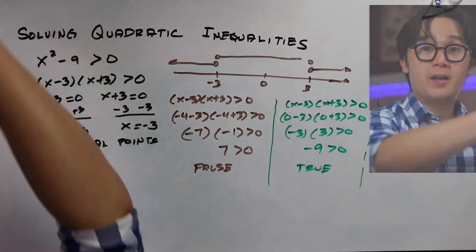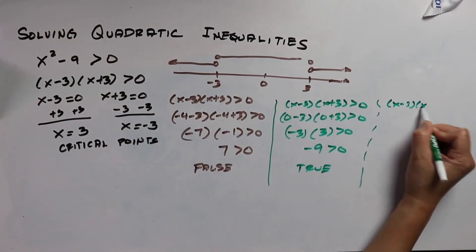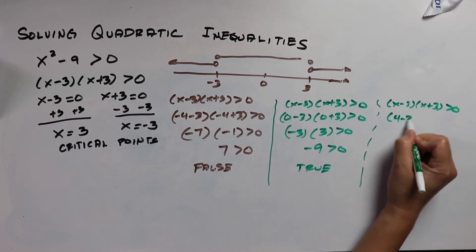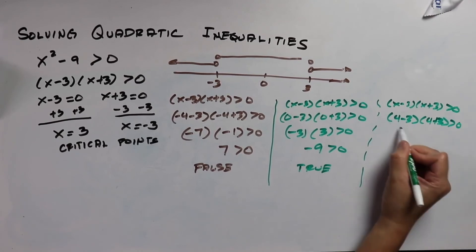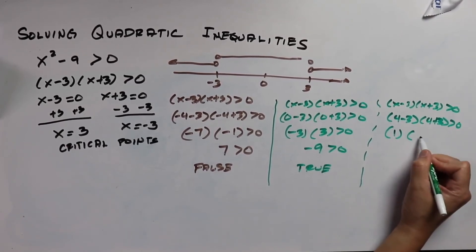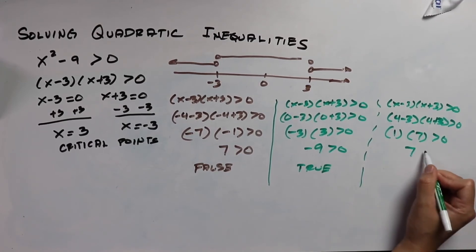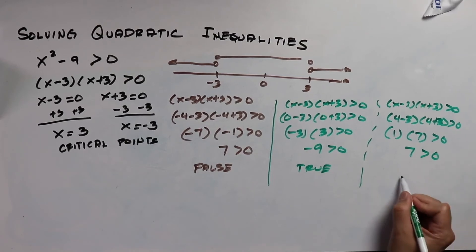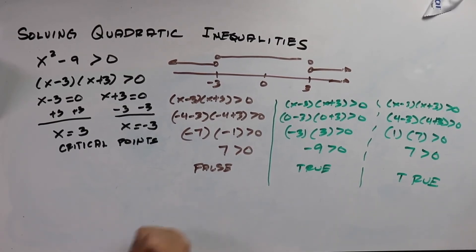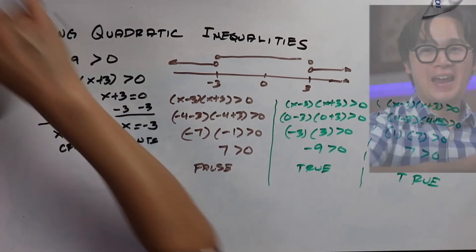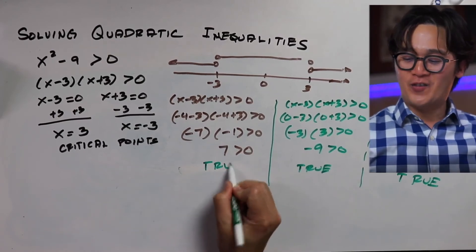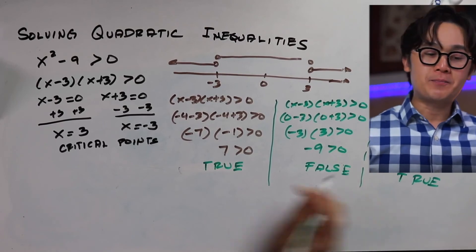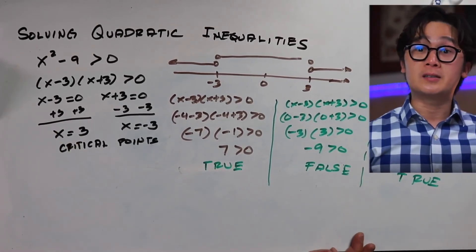For the third partition — anything greater than positive 3 — let's use x equals 4. We get 4 minus 3 times 4 plus 3, which is 1 times 7, equal to 7. Is 7 greater than 0? This is true. I need to correct myself: the second partition was false, and this third partition is true.